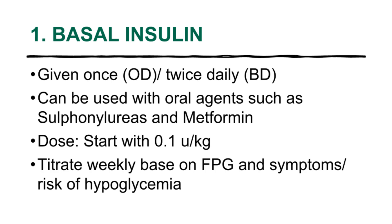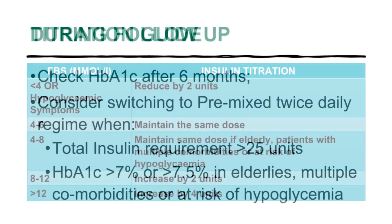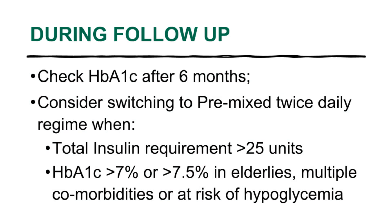The starting dose can be estimated at 0.1 unit per kilogram and titrated weekly based on fasting glucose level. This table serves as a guide to titrate basal insulin — weekly titration based on fasting blood glucose can be done by increasing or reducing 2 to 4 units or maintaining the same dose. Watch out for hypoglycemia. During follow-up, HbA1c can be used as a guide for treatment response.